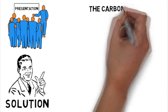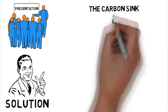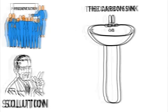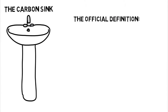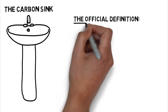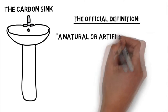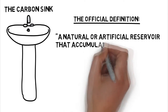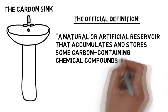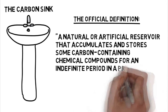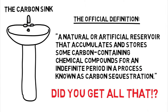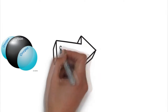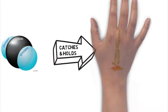The carbon sink. What is a carbon sink? Well, it's rather simple, really. The official definition of a carbon sink is a natural or artificial reservoir that accumulates and stores carbon-containing chemical compounds over an indefinite period, a process known as carbon sequestration. It basically means that a carbon sink is anything that absorbs carbon and holds onto it.